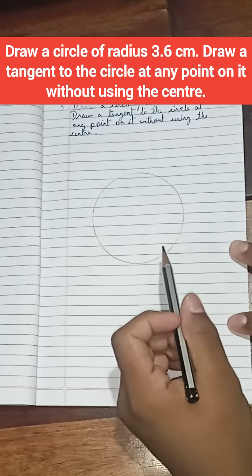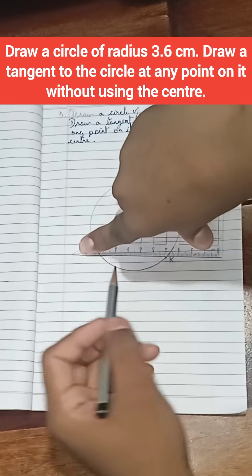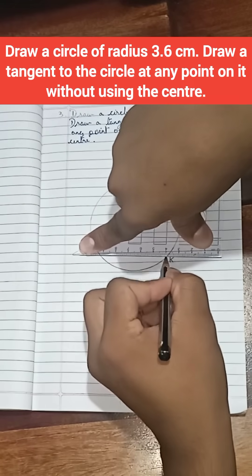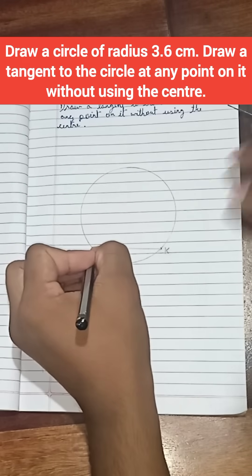Now draw a point on the circle and name it K. Now draw a chord line from the point K and name it point B.